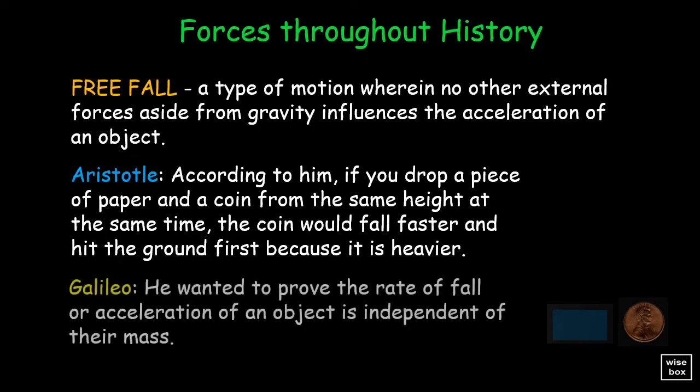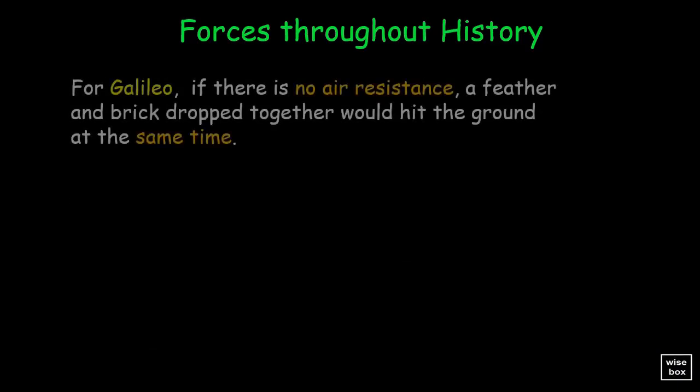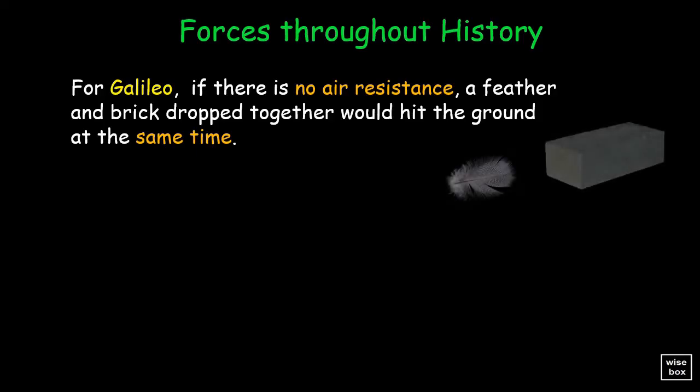But Galileo wanted to prove that the rate of fall or acceleration of an object is independent of their mass. For Galileo, if there is no air resistance, a feather and brick dropped together would hit the ground at the same time.